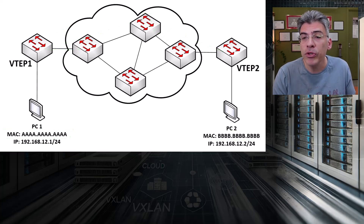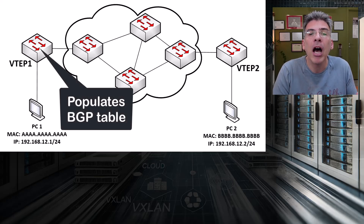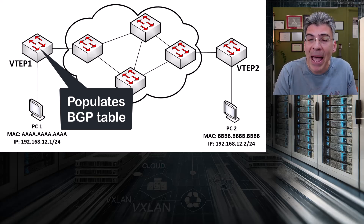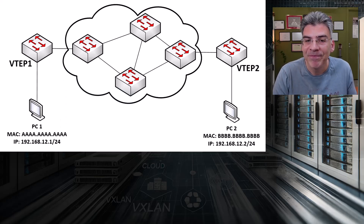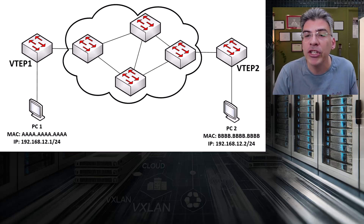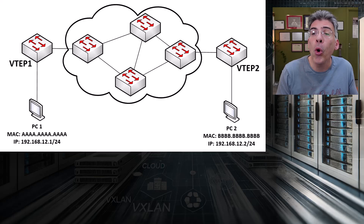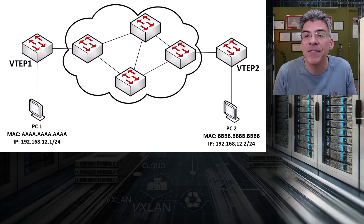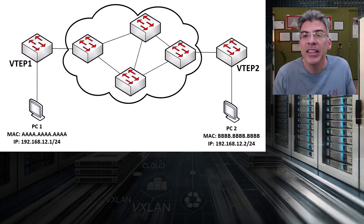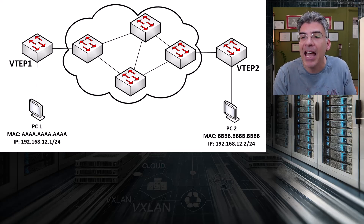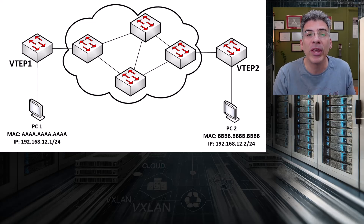The MPBGP EVPN solution allows these devices to share information about the MAC addresses of hosts that exist on particular VTEPs. This information is used to populate the BGP table of the local VTEPs — yes, the BGP table contains the MAC addresses of remote hosts that exist on the same VNI. In this way, we vastly reduce the operation of flood and learn, making the whole process more efficient. We're using BGP to populate the EVPN address family BGP table with MAC addresses, learning from all VTEPs that include a particular VNI. In order to make this work, we need to ensure that we have several different technologies up and running within this topology.